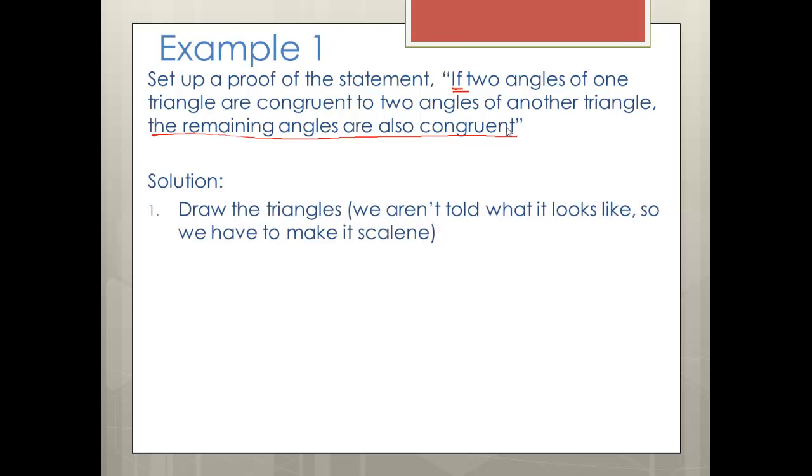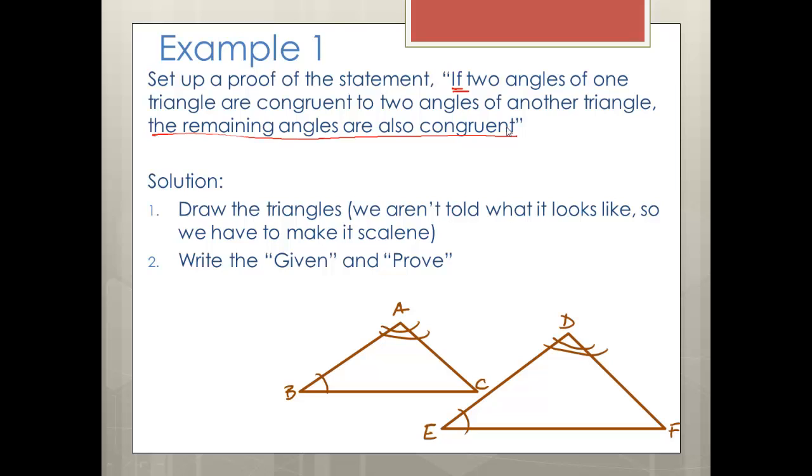Okay, so the solution: draw the triangles. We aren't told what the triangles look like, so we make it scalene. It doesn't say isosceles, equilateral, anything like that. So we make them scalene. And then we have to write the given and the proof. And notice that I added in the congruent marks and labeled them, because labeling is important. So we're given that angle A is congruent to angle D, and that angle B is congruent to angle E. And we have to prove that angle C is congruent to angle F. So all we were asked to do is set up a proof in this statement, nothing more. Sometimes that's all you have to do is set it up. You won't actually have to prove anything, just set it up correctly.